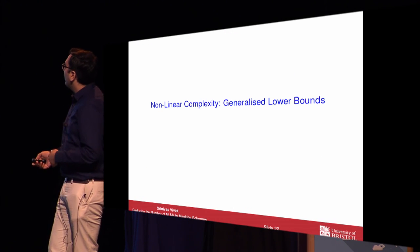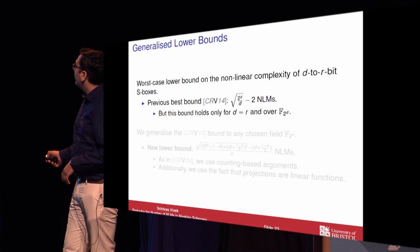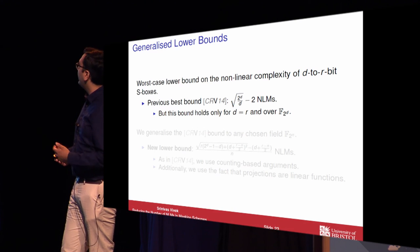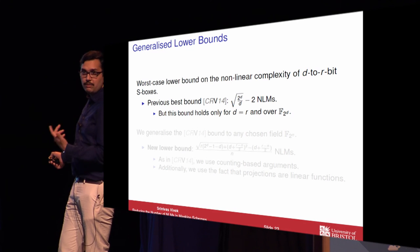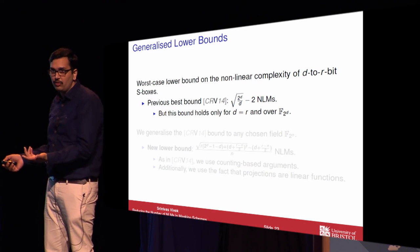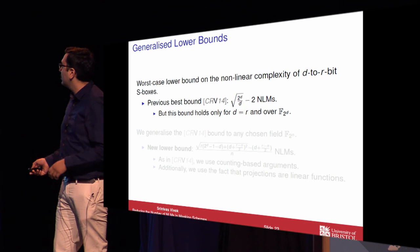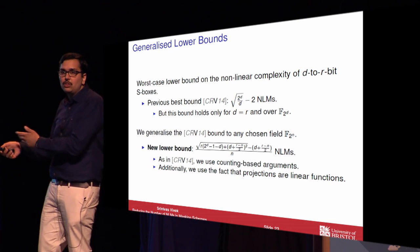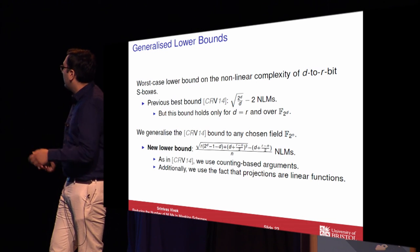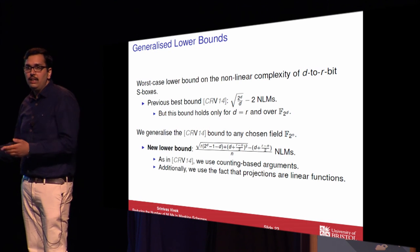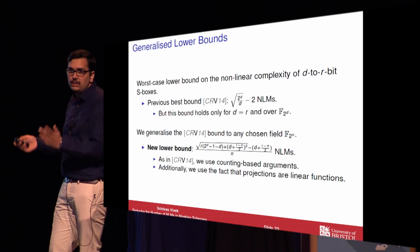We also generalized the previous lower bound results. In the CRV paper, a lower bound was established showing that to evaluate any D-to-D bit S-box over F2 power D, there exist polynomials needing square root of 2 power D over D non-linear multiplications. We generalize this to any D-to-R bit S-box where R can be less than D, and for any field. Our argument is based on a counting argument as in the CRV method, additionally using the fact that projections are linear functions.